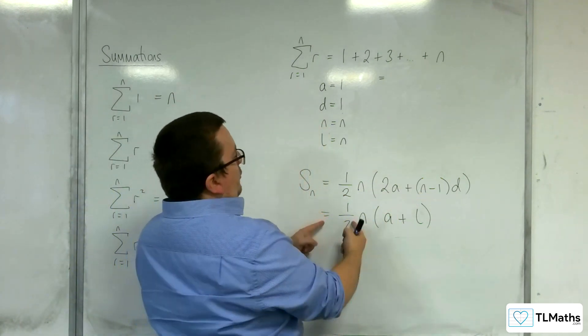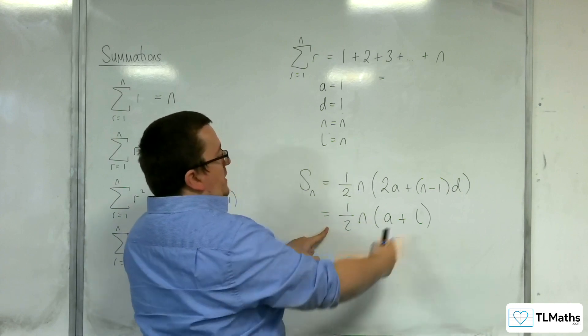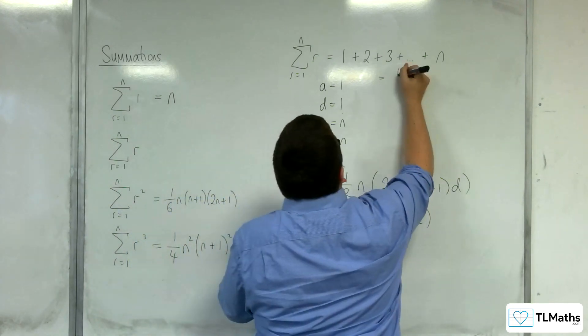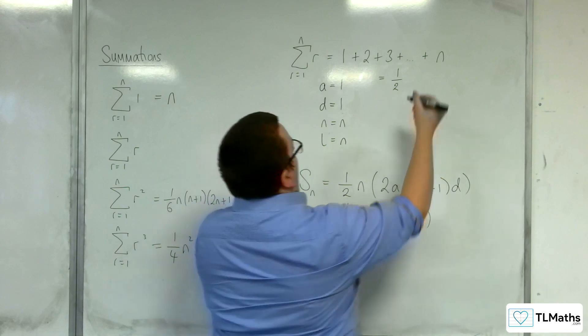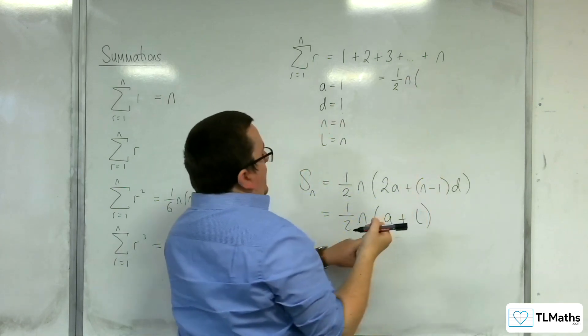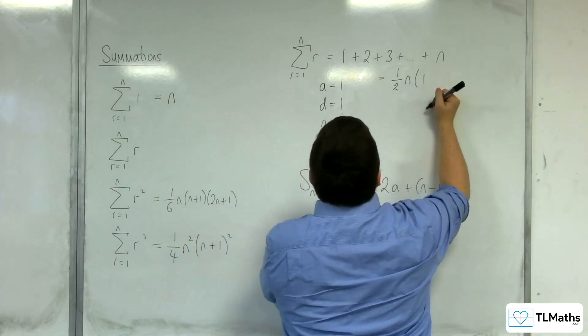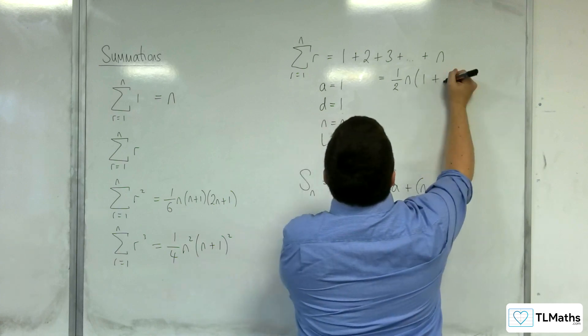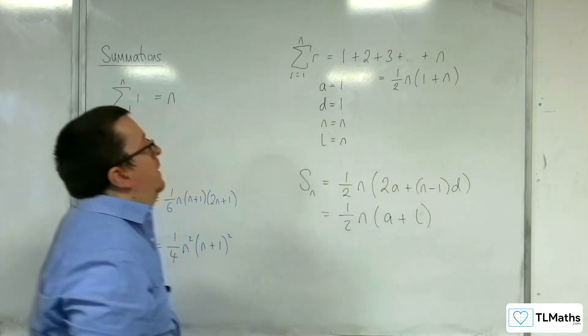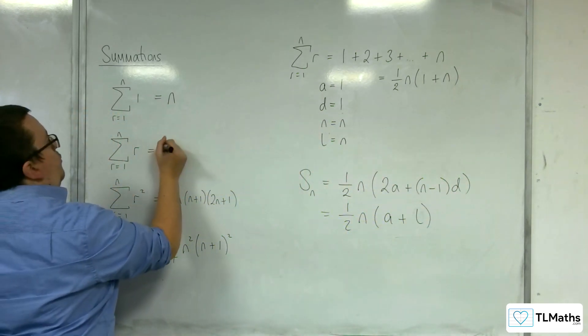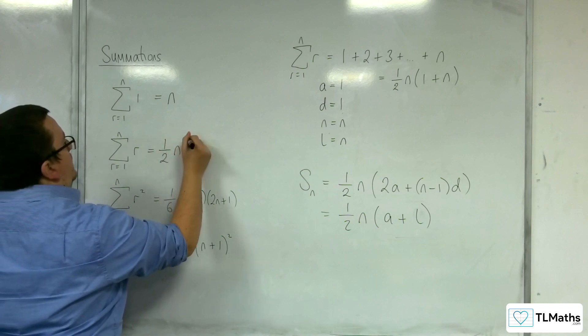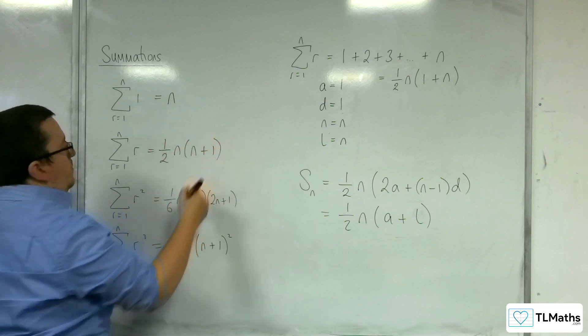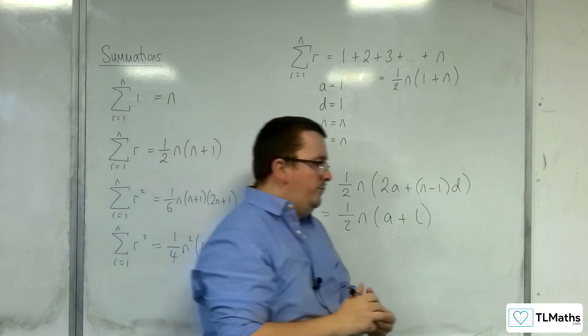This one's easier to work with. You can use either, but because we know what the last term is, I can just go in directly with this one. This is 1 half times n, times the first term, which is 1, plus the last term, which is n. And so, this is 1 half n, and I'll write it this way around, n plus 1.